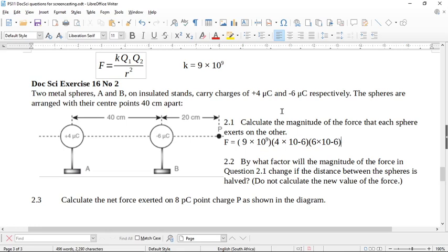So F equals K Q1 Q2, and then this is divided by or over the distance squared. The distance between these two is 40 centimeters. So this is going to be divided by 0.4 meters squared.